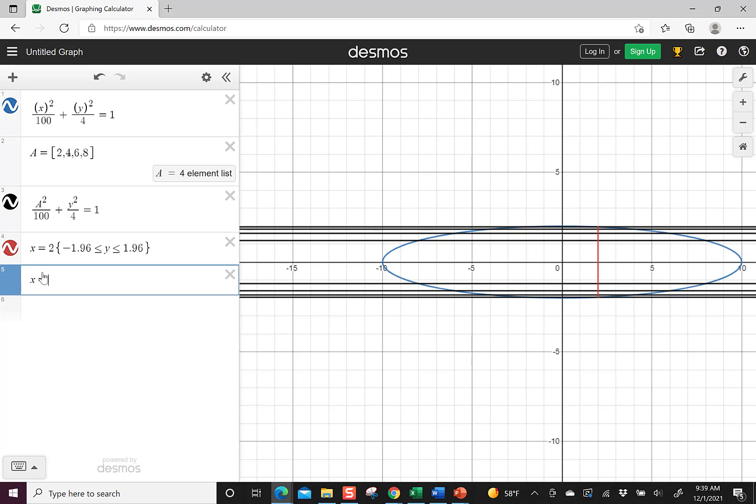So I'm going to say it's also x is negative 2, so that way it moves to the left. And then I have the same y. I have negative 1.96 less than or equal to y, which is less than or equal to 1.96. And so now I can see it on both sides.